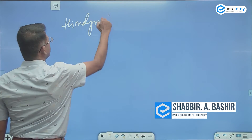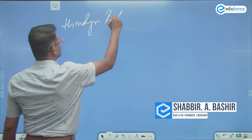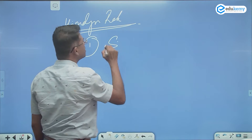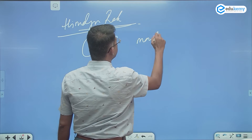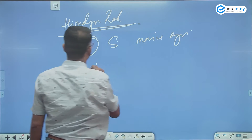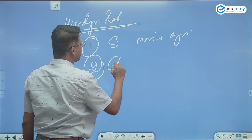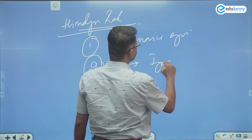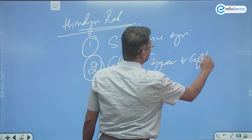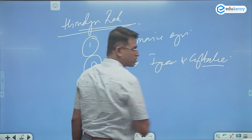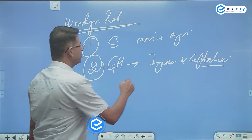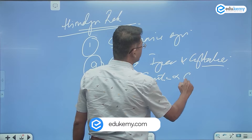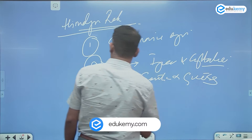In the Himalayan rocks, we have sedimentary rocks of marine origin. The Great Himalayas have igneous and crystalline rocks — they have granitic and gneiss rocks.